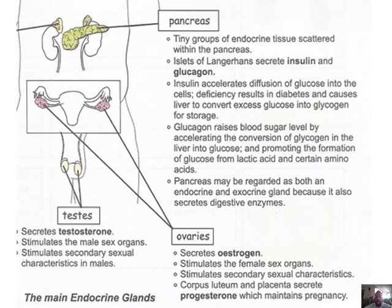The ovaries secrete estrogen, which stimulates female sex organs and secondary sexual characteristics such as wider hips and an hourglass figure, as well as reducing testosterone effects like beard growth. The corpus luteum and placenta secrete progesterone, which maintains the pregnancy.